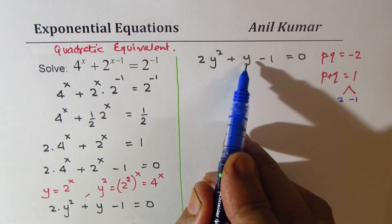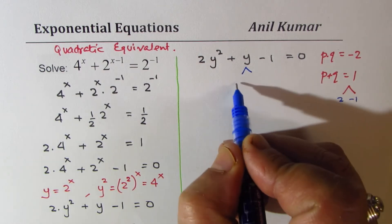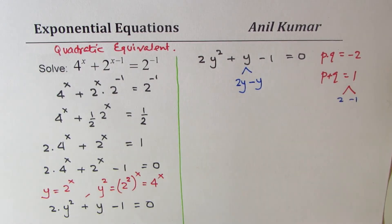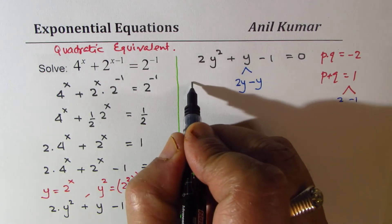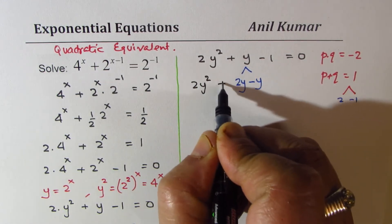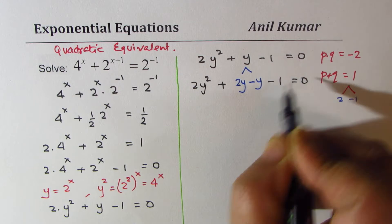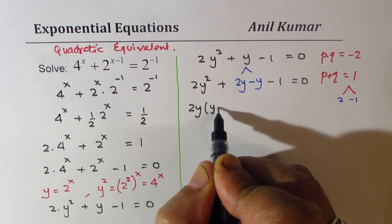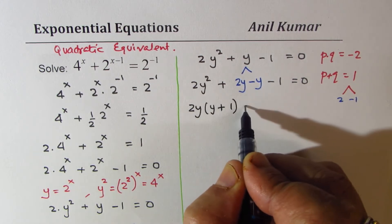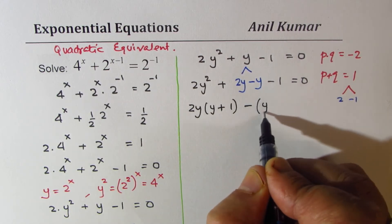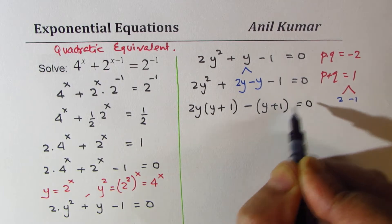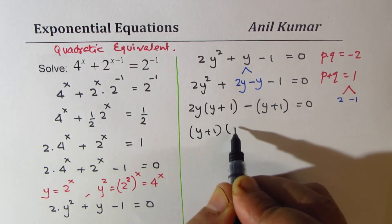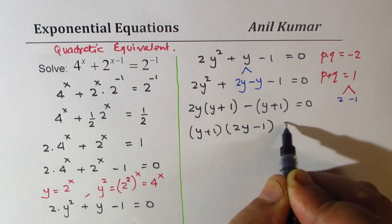So we will split this y as 2y minus y. And we will retain everything else. 2y square plus 2y minus y minus 1 equals 0. Now, if I take a common factor here of 2y, I get y plus 1. And here, minus 1 is the common factor. So we get y plus 1. Now, y plus 1 is a common factor that gives us 2y minus 1 equals 0.